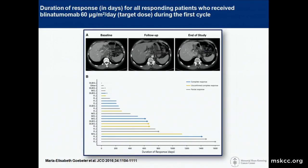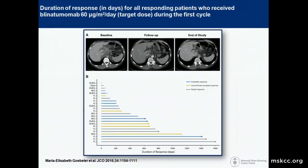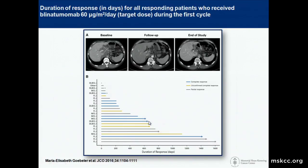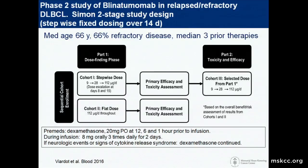This is the reason for the excitement. The duration of response for patients at the 60 microgram per meter squared dose was actually quite impressive — over a year of benefit in patients with relapsed lymphomas. You're seeing follicular and mantle cell lymphomas as well as some large cell lymphoma patients with ongoing, durable responses out to two years, and the overall response rate was impressive in that group.